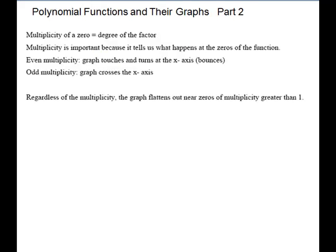Another term to look at is multiplicity, multiplicity of a zero. This is the degree of the factor. This is important because it tells us what happens at the zeros. If we have an even multiplicity, the graph touches and turns at the x-axis or bounces.